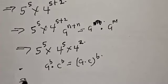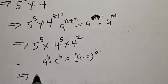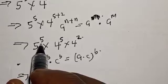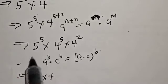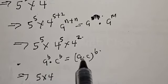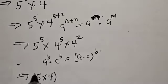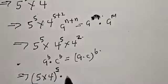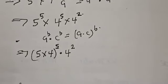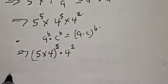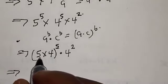This implies we can combine the terms with the same exponent of 5. Since both 5 and 4 share that exponent, our A is 5 and our C is 4, so we have 5 times 4, raised to power 5, then multiplied by 4 squared.